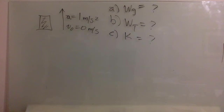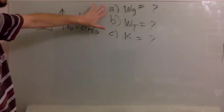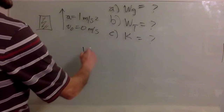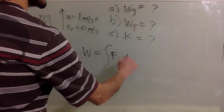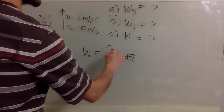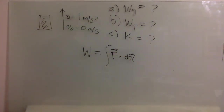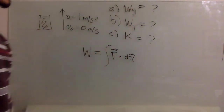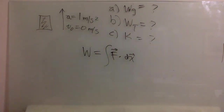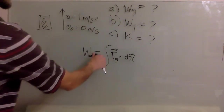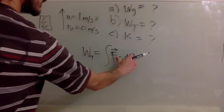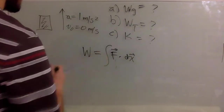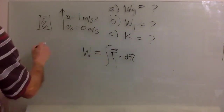The first thing that we have to remember is the definition of work, which is the integral of a force dot dx. The force is going to be given by the force of gravity in this case. For the tension, it will be the tension. But in any case, what you need is your free body diagram.